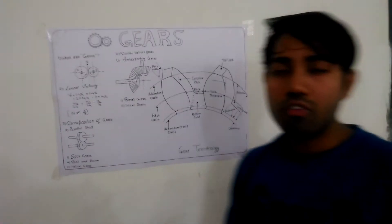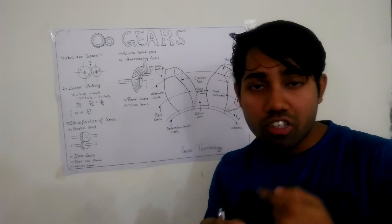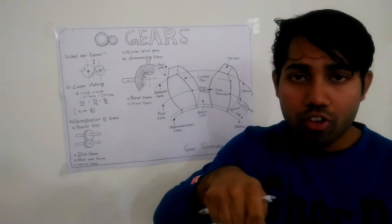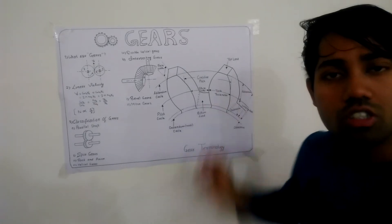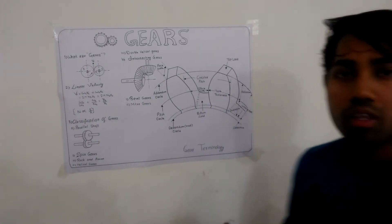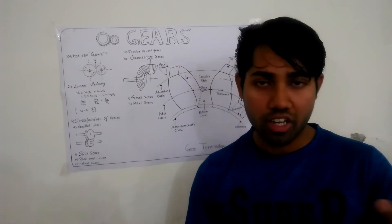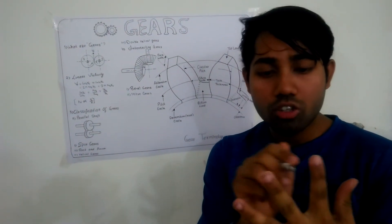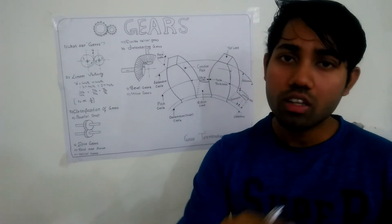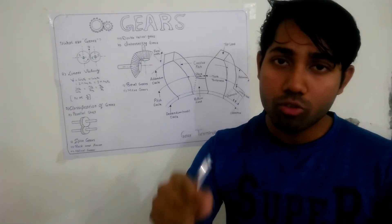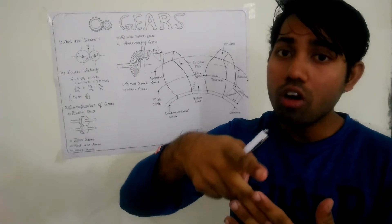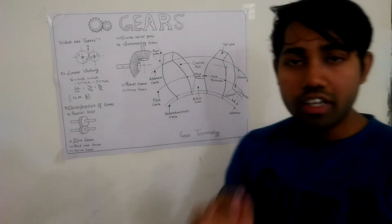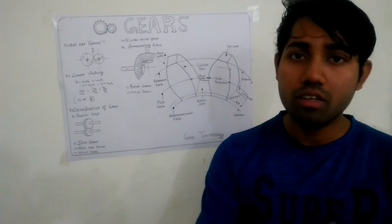Face width is the length of the tooth which is parallel to the axis of the shaft. The top surface of a tooth is known as the top land, and the bottom surface is known as the bottom land. Space width is the space between two teeth along the pitch circle. Working depth is the maximum depth to which a tooth penetrates into the space of another tooth. Clearance is the radial difference between the addendum and dedendum.